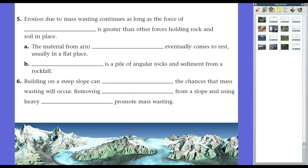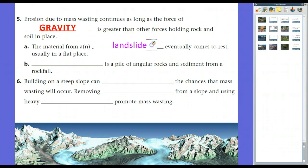Erosion due to mass wasting will continue as long as the force of gravity is greater than other forces holding rock and soil in place. Things like vegetation or man-made structures that will hold them like a retaining wall. The material from a landslide eventually comes to rest usually in a flat place. And you'll see it if you remember the video on the basin and range formation. I showed you those alluvial fans, which were essentially sediment stuff pulled down by landslides and things like that over time.